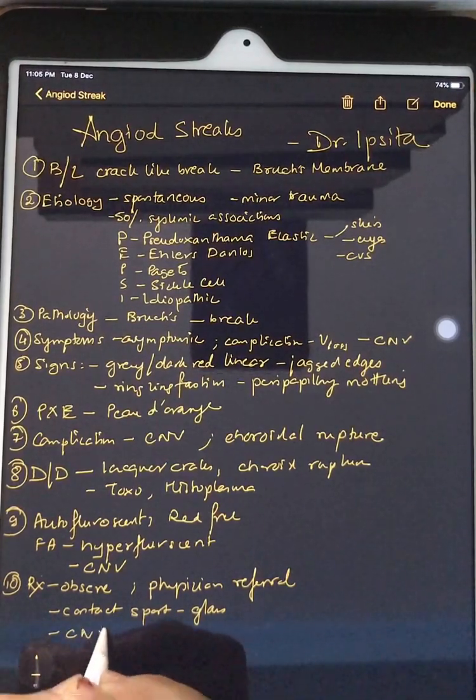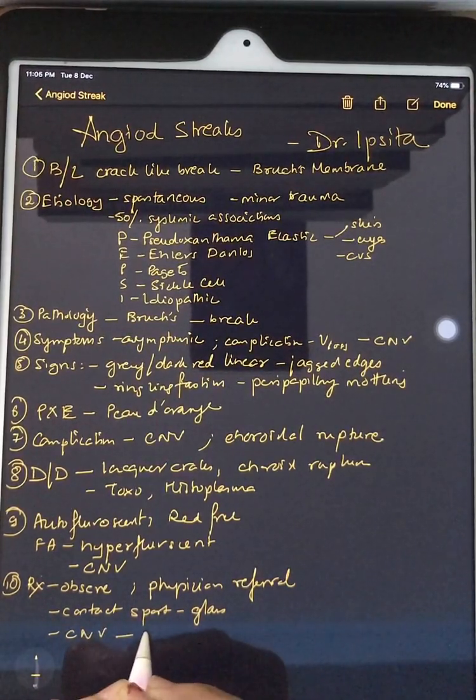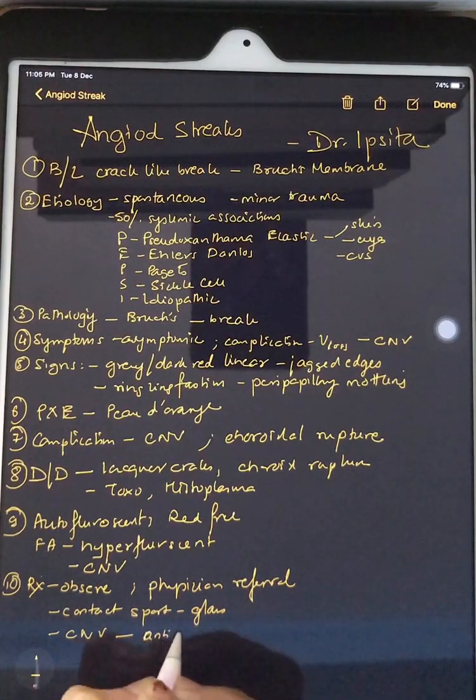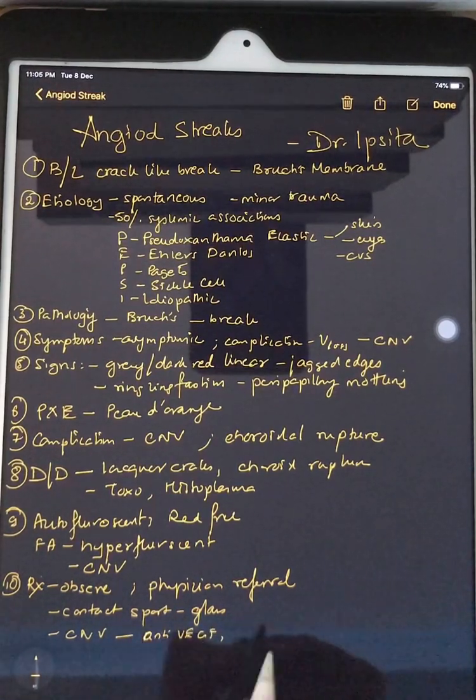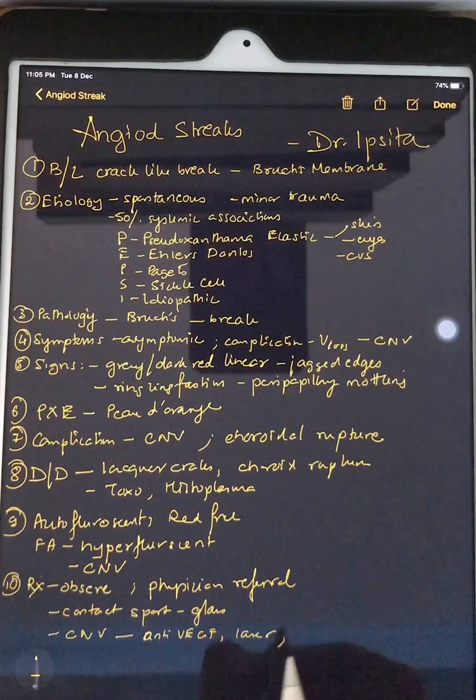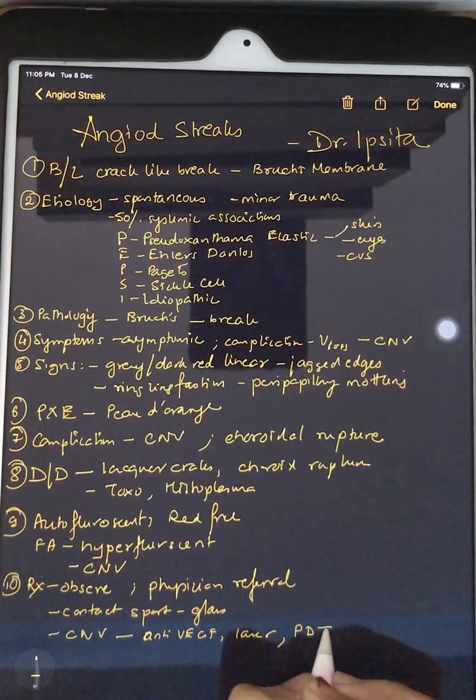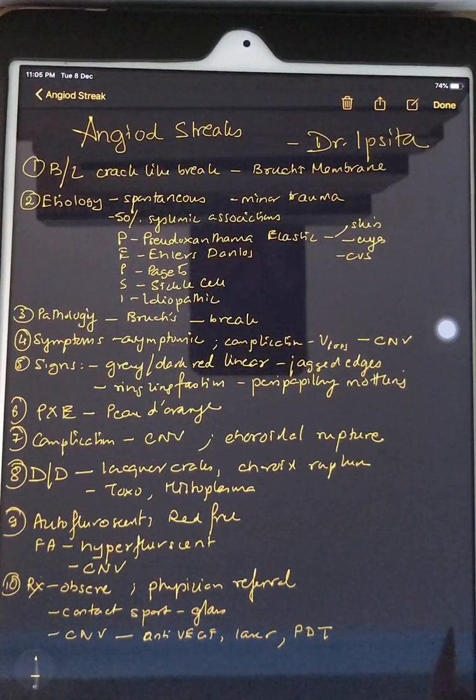If choroidal neovascularization develops, then they need intravitreal anti-VEGF or laser photocoagulation or photodynamic therapy. So these are the 10 points about angioid streaks that we need to remember.